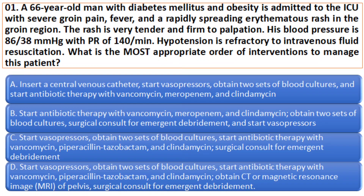Option 1: Insert a central venous catheter, start vasopressors, obtain two sets of blood culture, and start antibiotic therapy with vancomycin, meropenem, and clindamycin. Option 2: Start antibiotic therapy with vancomycin, meropenem, and clindamycin, obtain two sets of blood culture, surgical consult, and start vasopressor.